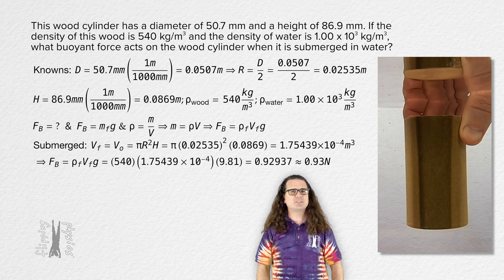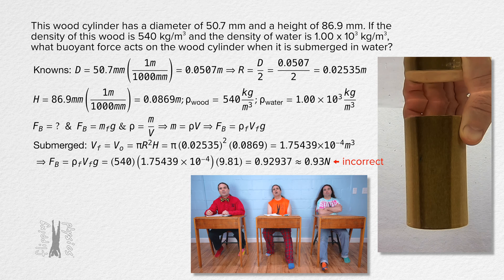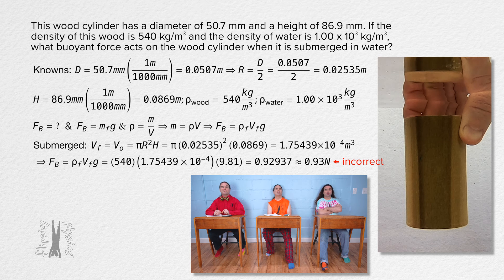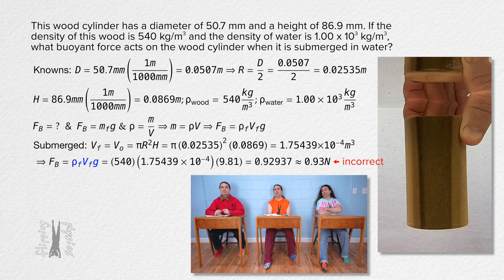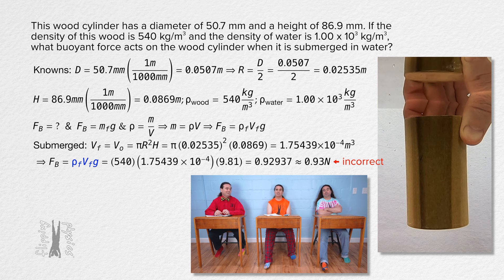Sorry, but no, this is not correct. You forgot to say 'displaced by the object' when you read the subscripts for the density and the volume in the buoyant force equation. Buoyant force equals the density of the fluid displaced by the object times the volume of the fluid displaced by the object times the gravitational field.